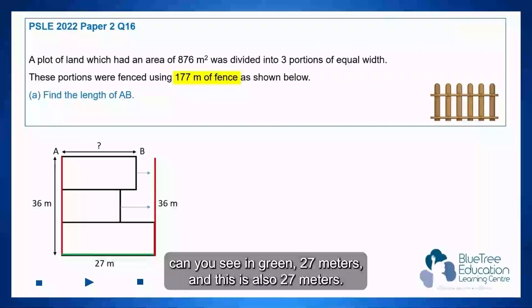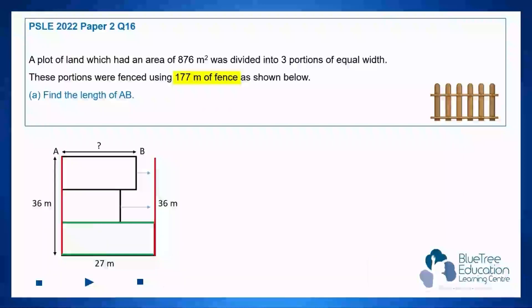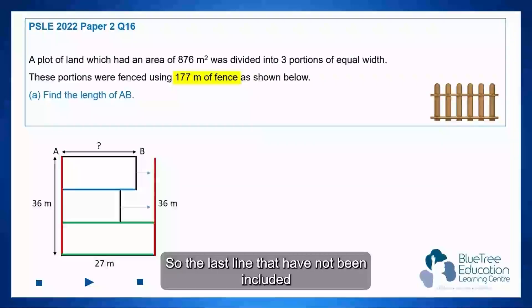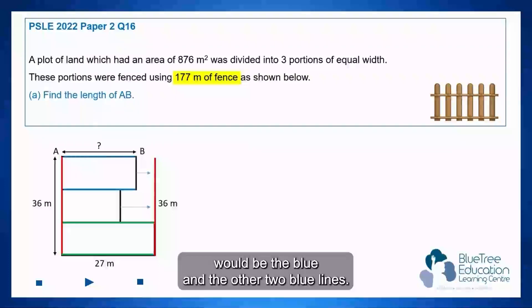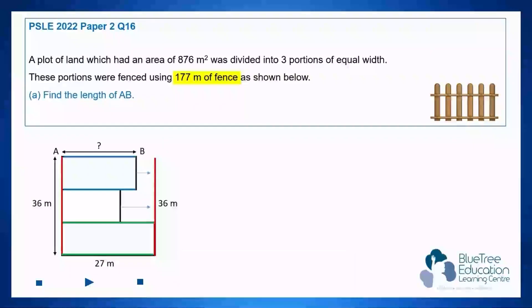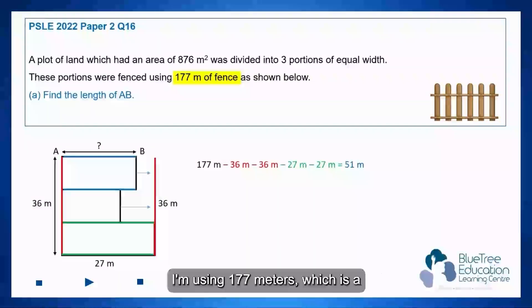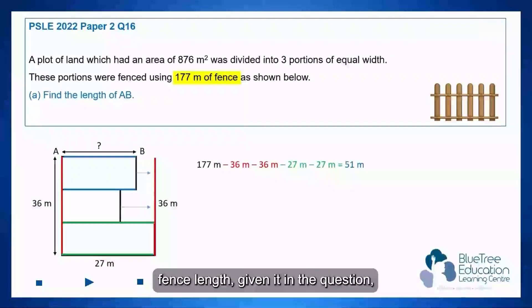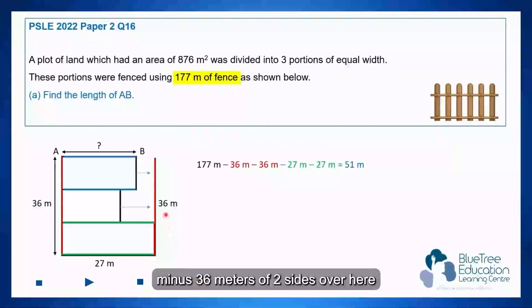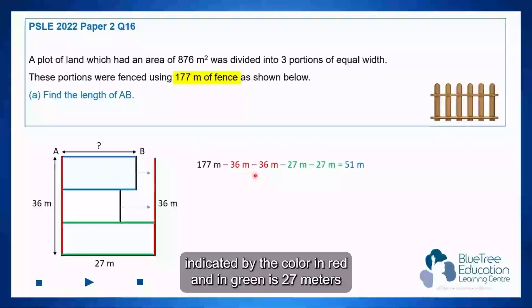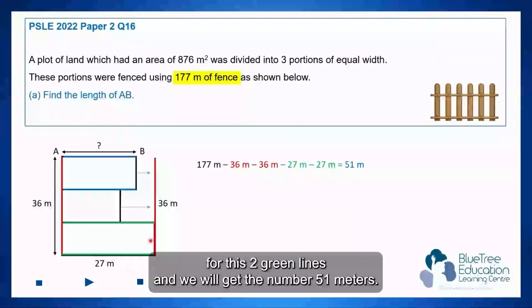The next part here, you can see in green 27 meters, and this is also 27 meters. So the last lines that have not been included would be the blue lines and the other two blue lines. Using 177 meters — the fence length given in the question — minus 36 meters on two sides indicated in red, and 27 meters for the two green lines.